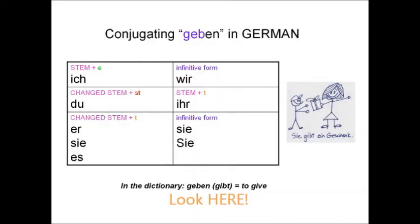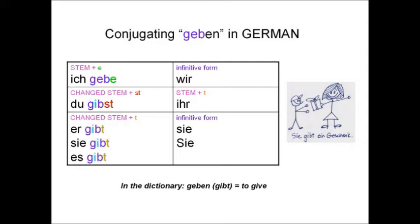This is the verb geben — geben means to give. In the dictionary it would say geben, and then in parentheses, gibt. Ich gebe. Du gibst. Er gibt. Wir geben. Ihr gebt. Sie geben.